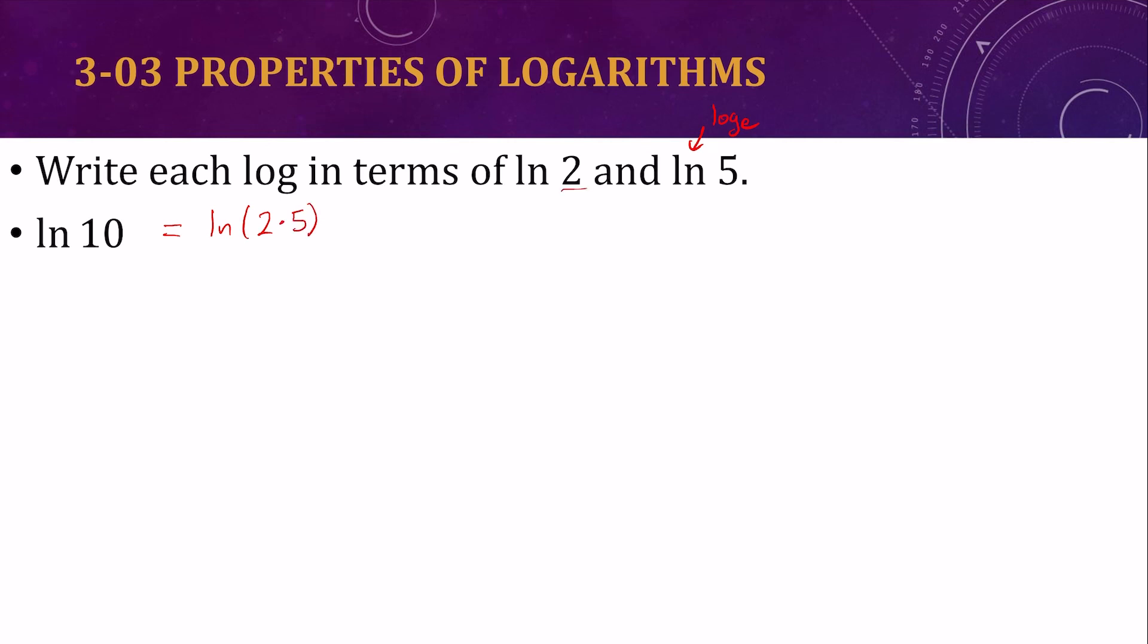The product property says if I multiply inside the logarithm, I can rewrite it as adding the two separate logarithms. And if you wanted to, you could double-check that in your calculator and see they are in fact the same.